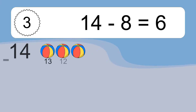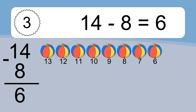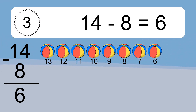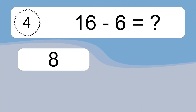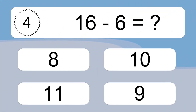14 minus 8 equals what? 14 minus 8 equals 6. Let's count it: 13, 12, 11, 10, 9, 8, 7, 6.